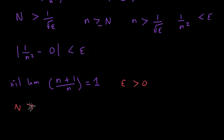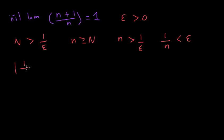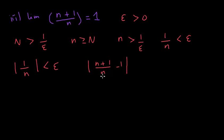We'll be choosing N to be greater than 1/epsilon. So whenever n is greater than or equal to N, this implies n is greater than 1/epsilon, so 1/n is less than epsilon. Since n is positive, the absolute value |1/n| is less than epsilon. And 1/n can be written as |(n+1)/n − 1|, because n/n is 1 and 1/n remains, and the ones cancel out — that's just an algebra trick. So |(n+1)/n − 1| is less than epsilon, which is exactly what we needed to prove. This completes our proof.